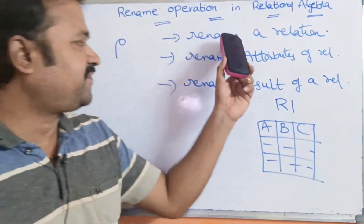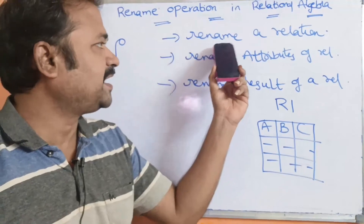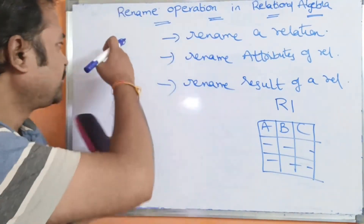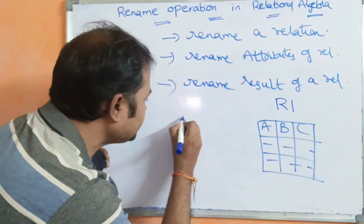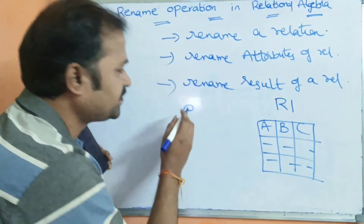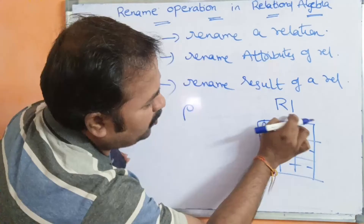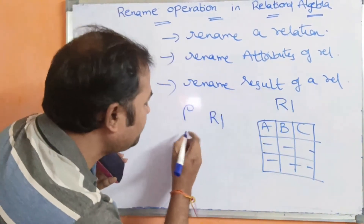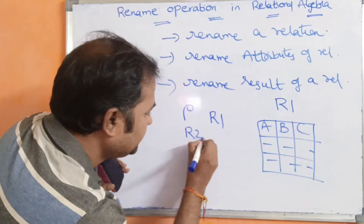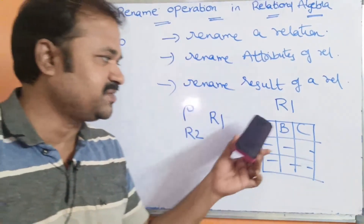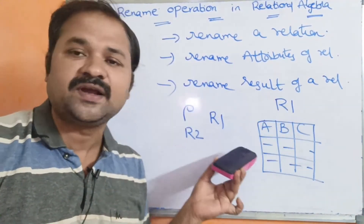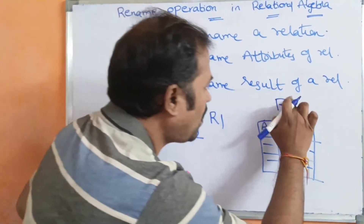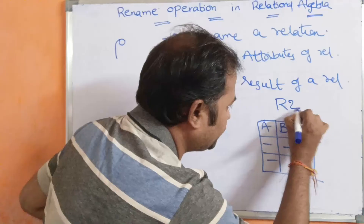The first task of the rename operator is to rename a relation. We use the rho operator for this. The whole relation name is R1. Let us rename R1 to R2. Whenever this statement is executed, the R1 relation name is modified to R2.